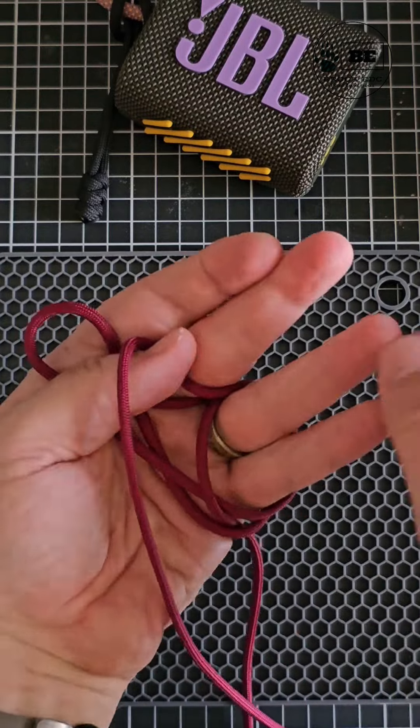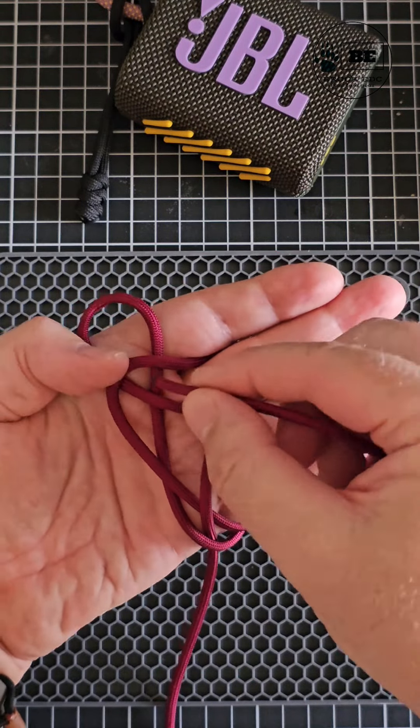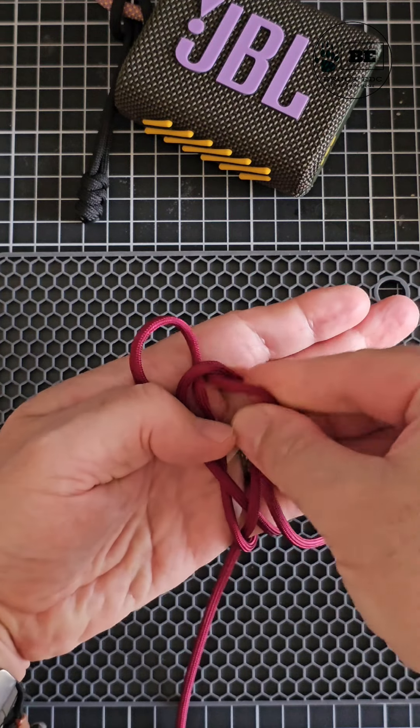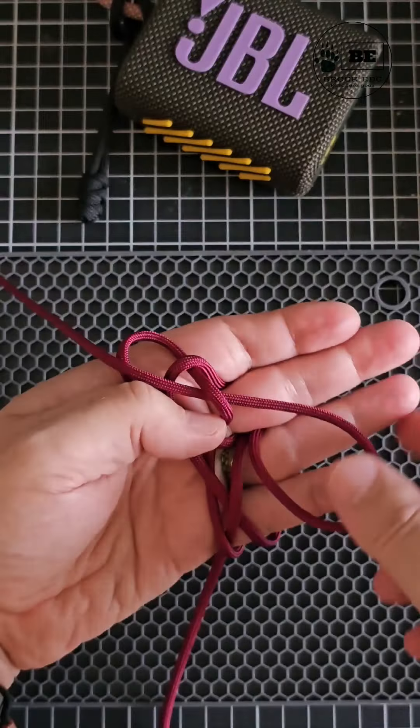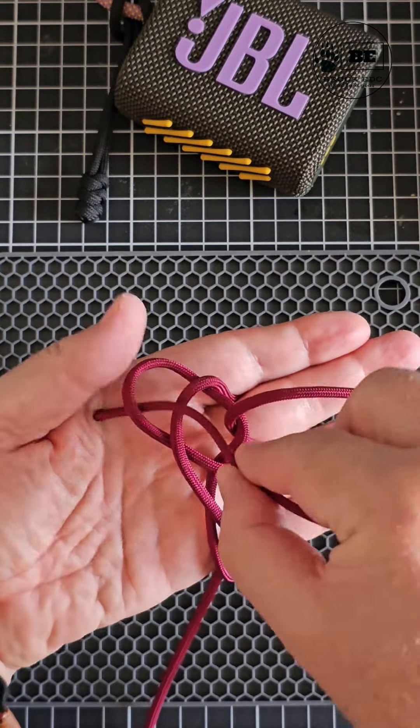We're then going to bring the working end through the triangle that we created earlier and you're going to go under, pull it through. You're then going to go over and again you're going to pull it through.